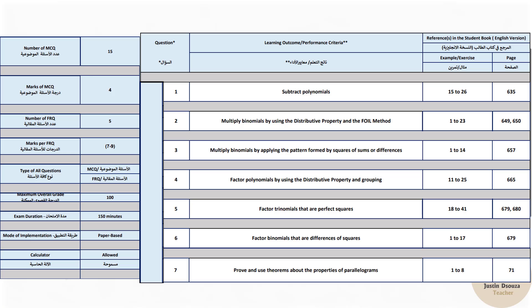We will get into the exam scheme first. You can see there are 15 MCQ questions. The first 15 will have options — four options — and you need to select the correct one. Whereas the last five, question number 16 to 20, will be FRQ — free response questions, or simply put, writing questions. You need to write everything in detail, each step and everything. This is important because everything must be written in detail.